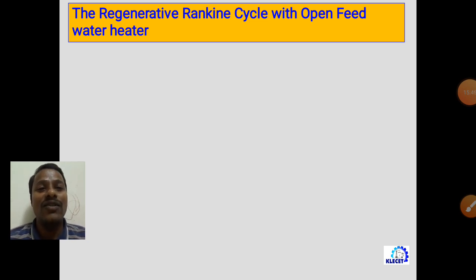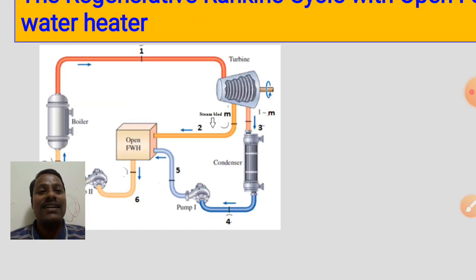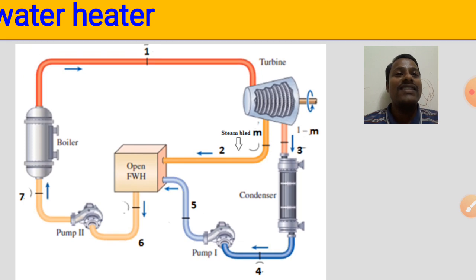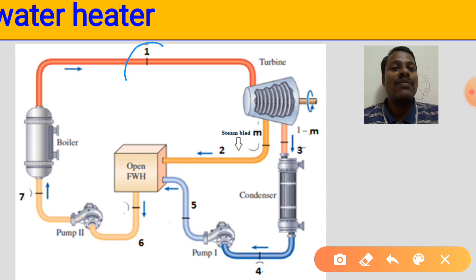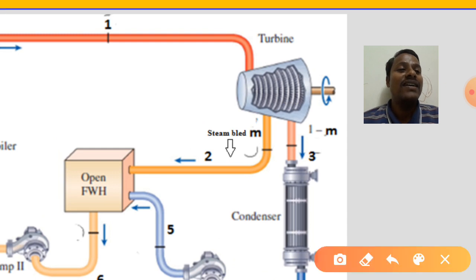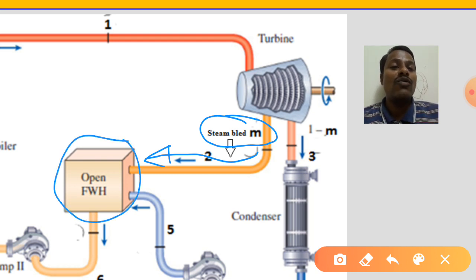The regenerative Rankine cycle with an open feed water heater is shown in the schematic arrangement. Steam enters the turbine at state 1 and undergoes expansion. While the steam is expanding, a small quantity of steam is bled from the turbine casing at state 2 and sent into the open feed water heater. The remaining steam continues to expand further inside the steam turbine.